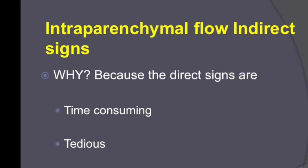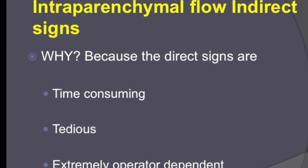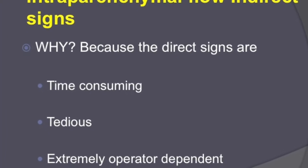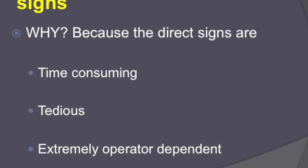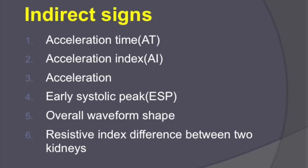Now we will see the intraparenchymal indirect signs. The indirect signs are important because the direct signs are time-consuming, tedious, and extremely operator dependent. The indirect signs include acceleration time, acceleration index, early systolic peak, overall waveform shape, and resistive index difference between the two kidneys. The normal values and abnormal interpretation will be covered in our second part on renal artery stenosis and its findings on color Doppler.